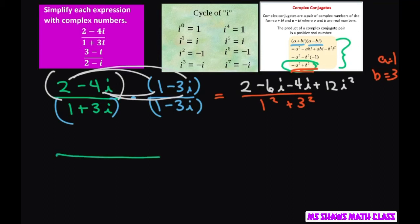So the denominator, we had 1 plus 9, that's 10. So we have 2 minus, that's going to be 10i.